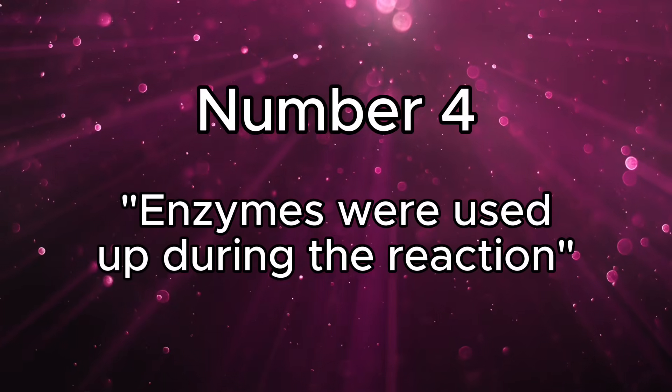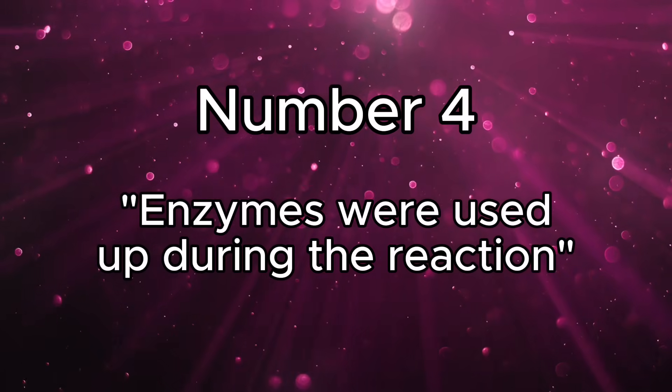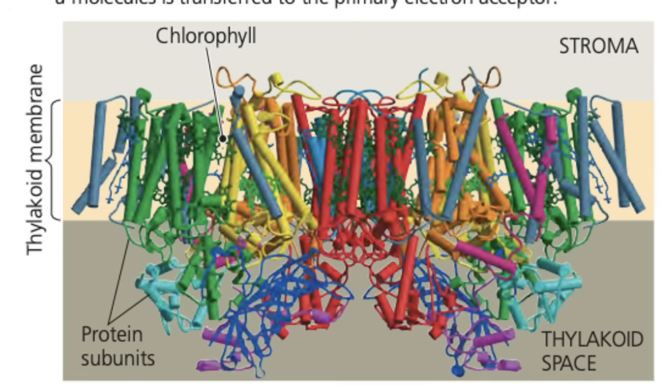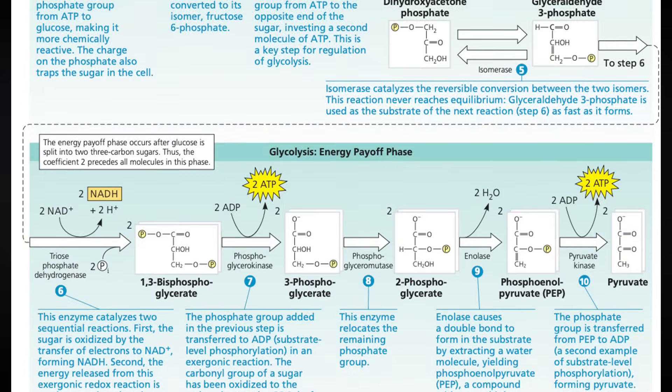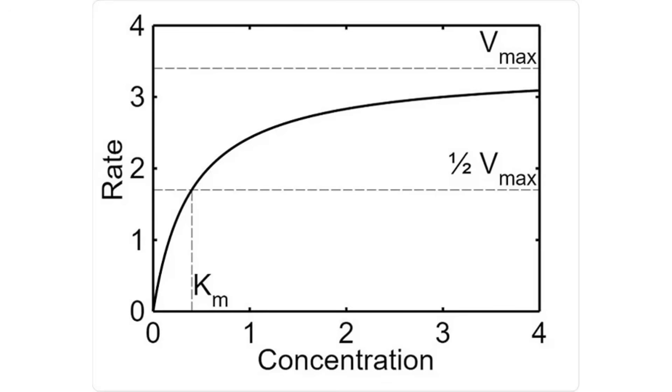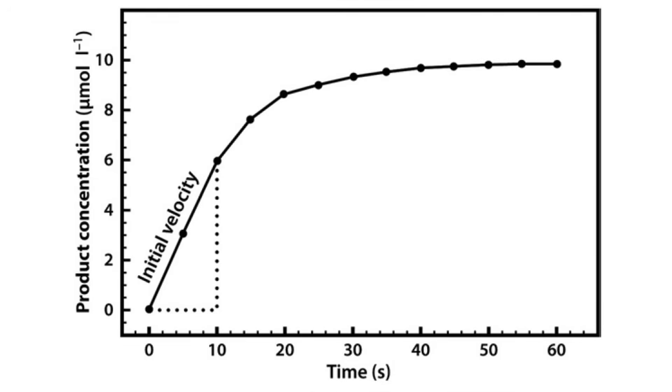At number 4, we have: enzymes were used up during the reaction. One of the major facts about enzymes is that they are completely reusable once they're finished catalyzing their substrates into their products. This can be a common trap because enzymes can play a role in just about any system or pathway AP Biology can test you on. In particular, watch out for this as a misdirection in questions that involve enzyme kinetics or enzyme-catalyzed reaction rates measured across time. So if any of these graphs that you see on screen ever show up, be on the lookout for this trap.